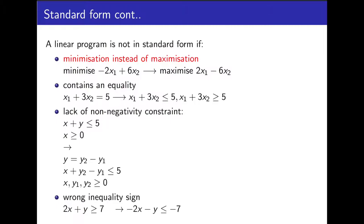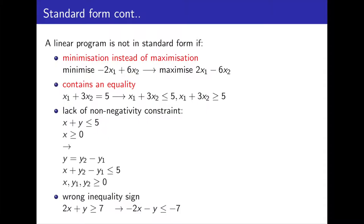A linear program is not in standard form if any of the following are true. The objective function is a minimization and not a maximization. For example, if we have minimize minus 2x1 plus 6x2, we negate and flip the inequality to give us maximize 2x1 minus 6x2. If any of the constraints contains an equality, we form two new equations using less than or equal to and greater than or equal to, which give the same meaning.